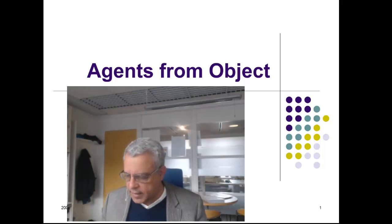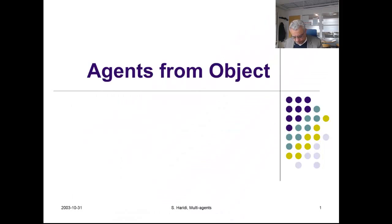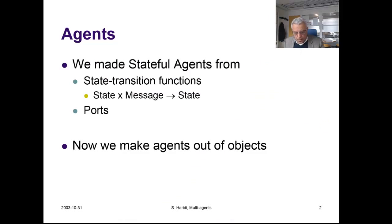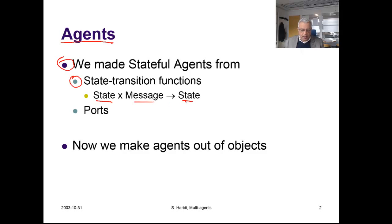Sometimes this is called an active object. Agents, as we said, are made stateful by using a function — a function that takes a state and a message and creates a new state — and ports.